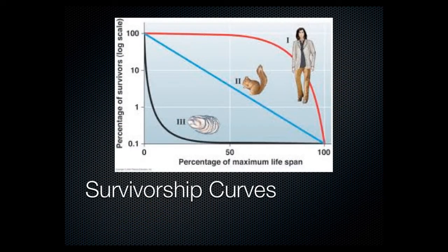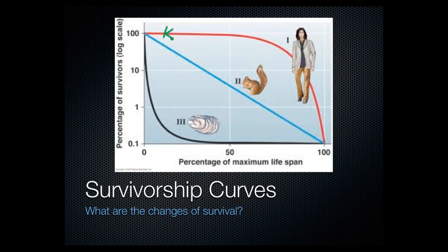R and K-selected species can be plotted on a survivorship curve. A survivorship curve basically talks about what percentage of the population is going to be alive at a given point in their lifespan. There are three different curves you can have, and the first one would be the top curve.